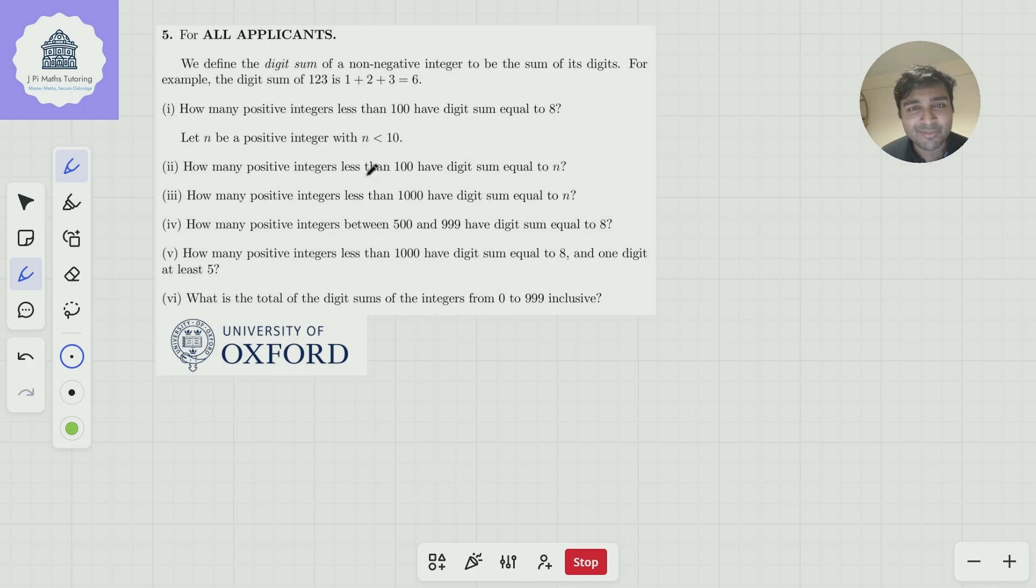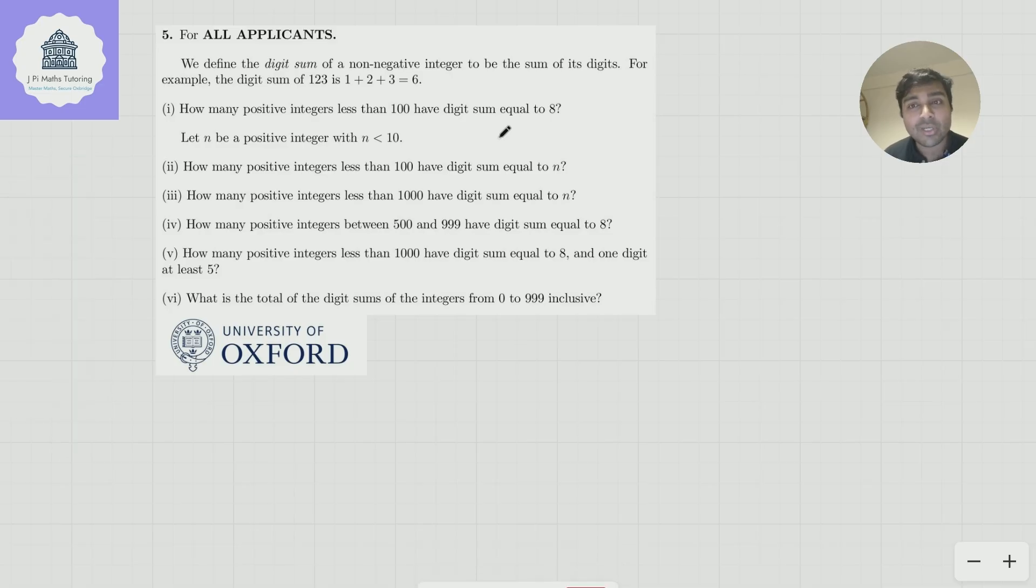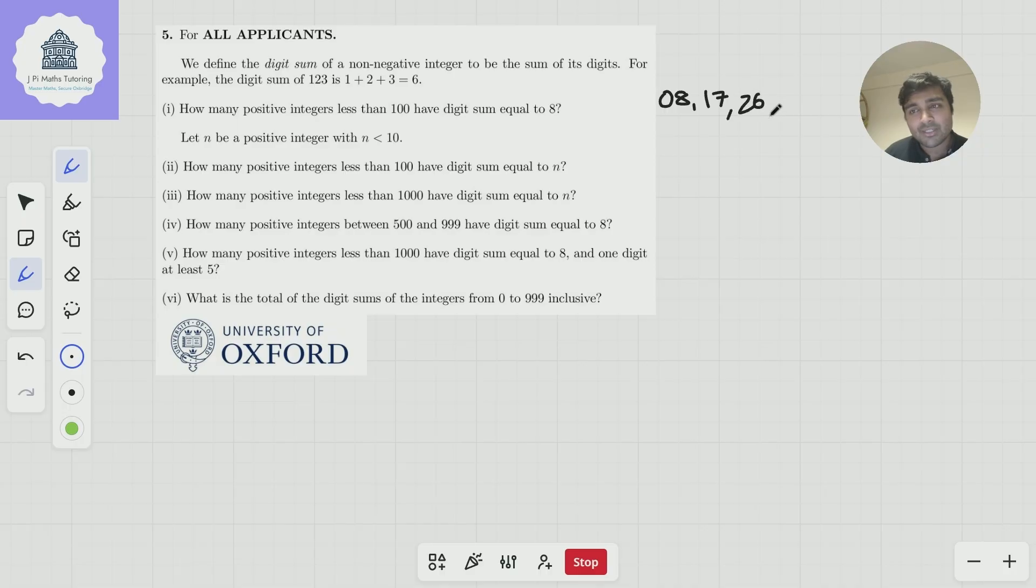So part one: how many positive integers less than 100 have digit sum equal to eight? Okay, well, let's just play about with it. What's the smallest number that has a digit sum equal to eight? Well, that's obviously the number eight, but I'm going to write that as 08. And you'll see why in a second. What's the next number? Well, obviously no other single digit numbers will work. So we have to go into the tens. So the first digit will be one, which forces the second digit to be seven. And we can maybe see what's going to go on here. We're going to get 26 next, then 35. So we're increasing the tens digit by one, decreasing the units digit.